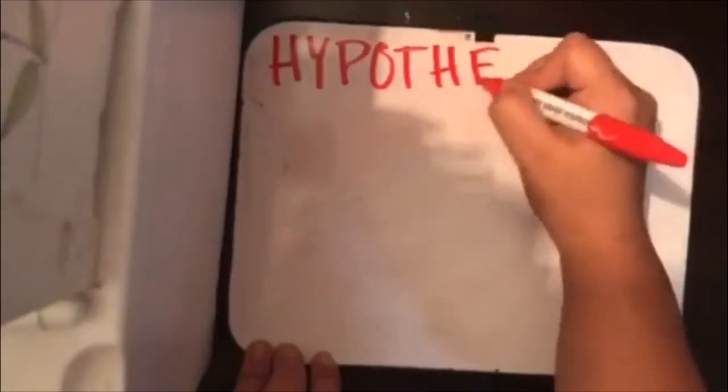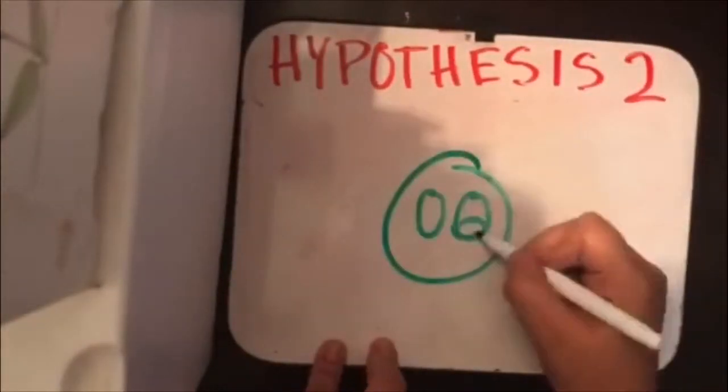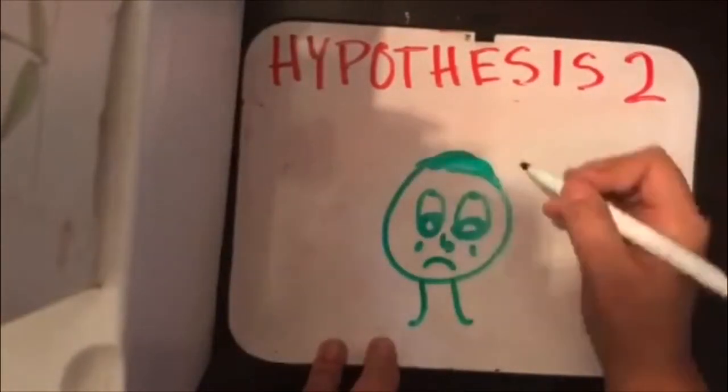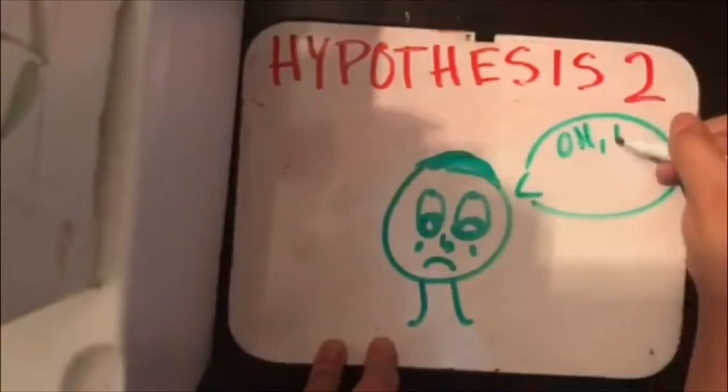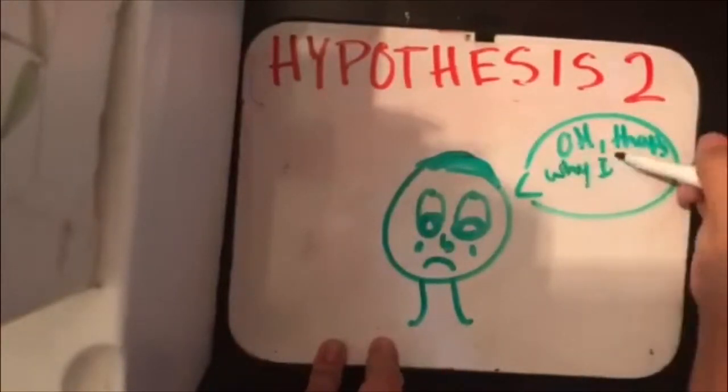Hypothesis two: if a person experiences a state of arousal for which they have an appropriate explanation, then they will be unlikely to label their feelings in terms of alternative cognitions available.